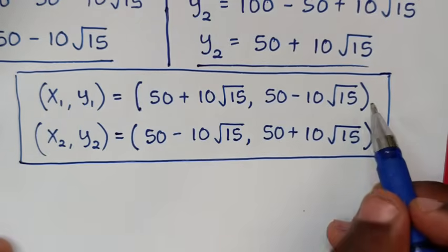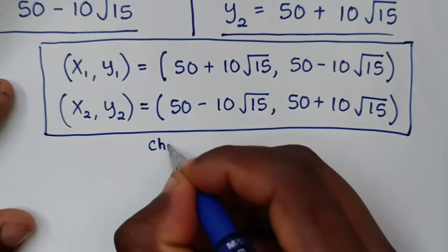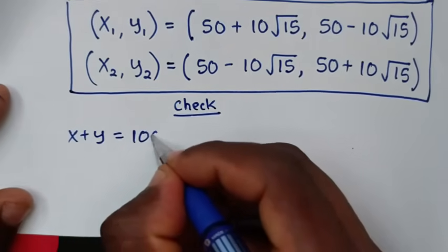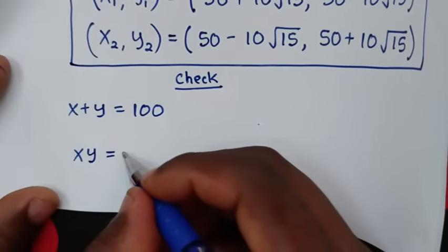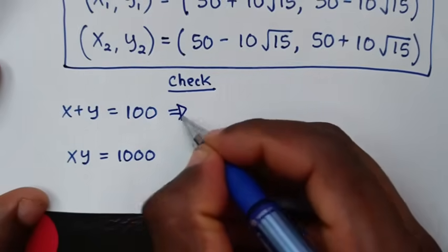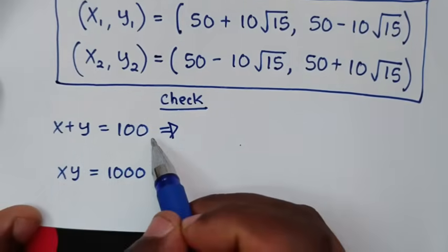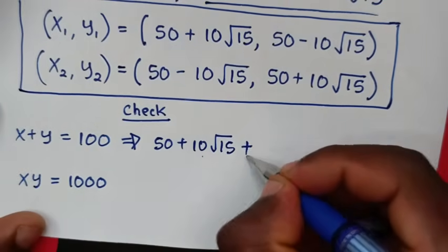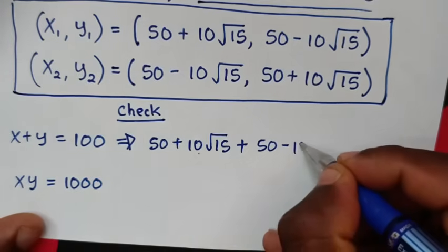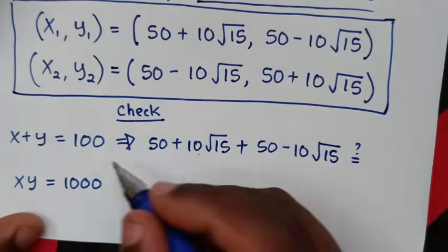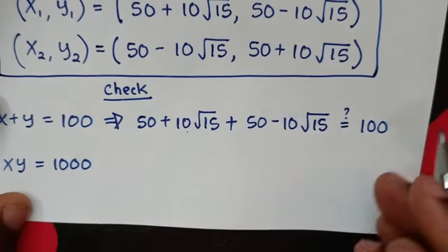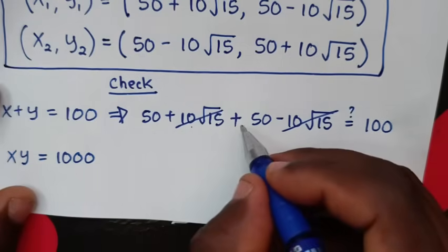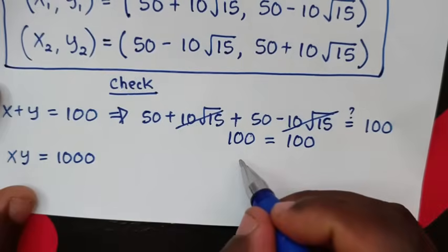Let's verify by checking both equations using the first solution. For x plus y equals 100: x1 plus y1 gives 50 plus 10 square root of 15 plus 50 minus 10 square root of 15. The 10 square root of 15 terms cancel, leaving 50 plus 50 equals 100. The left side equals the right side — correct.